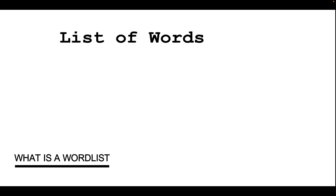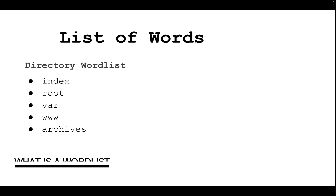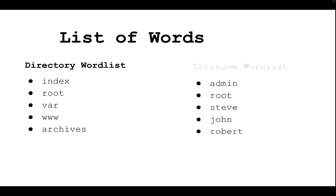A word list is just a list of words. For example, we have the directory word list with a list of common directory names, and then we have a username word list with a list of common usernames. The main purpose of using a word list is to have a pre-compiled list of words which can be used by a security tool.